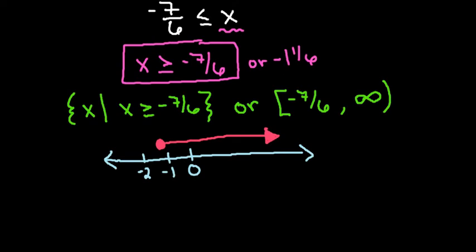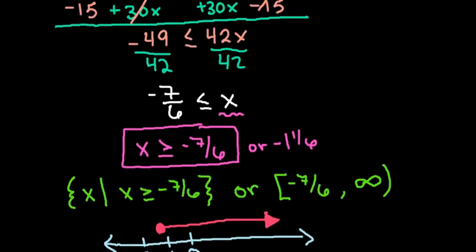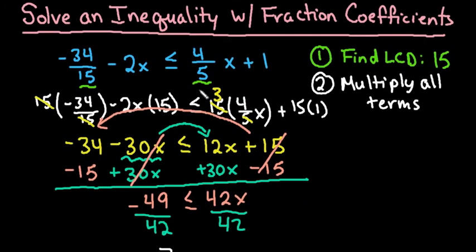It's always a good idea to check your work, especially when you have a more complicated equation or inequality. So the way that I would check inequalities is pick any value that is in the solution set. In this case, 0 is in our solution set, so I'm going to go back up and I'm going to plug 0 into my original equation and make sure that it makes sense.